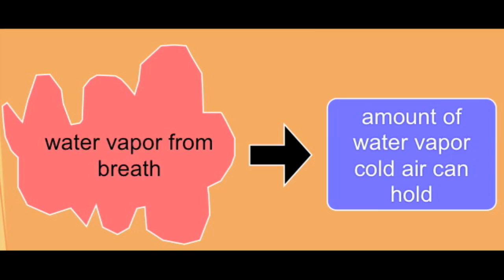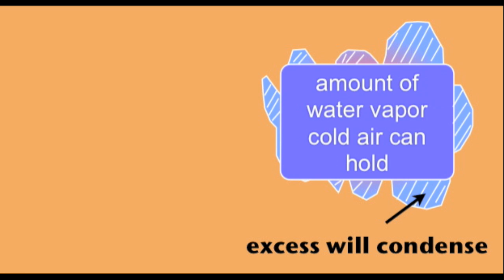Our breath has moisture or water vapor in it, and we cannot see this water vapor. Since our body is warm — around 35 degrees Celsius — our breath has a higher temperature than the surrounding air, which is usually 15 degrees Celsius or lower. The amount of our breath's water vapor must exceed the amount of water vapor that the cold air can hold, so that any water vapor exceeding that concentration will cool and condense into tiny droplets, which we see because light is reflected from the droplets back to our eyes.